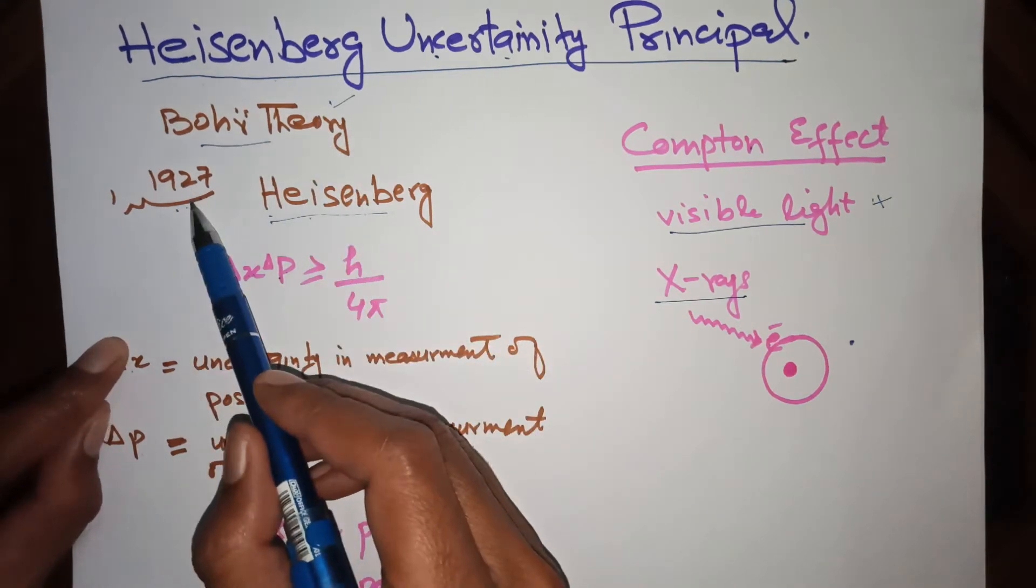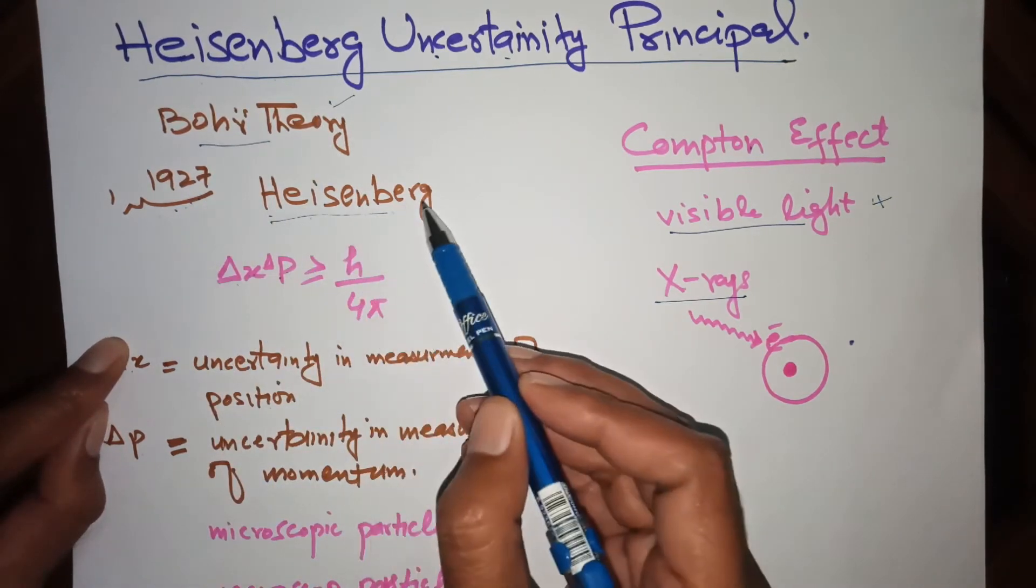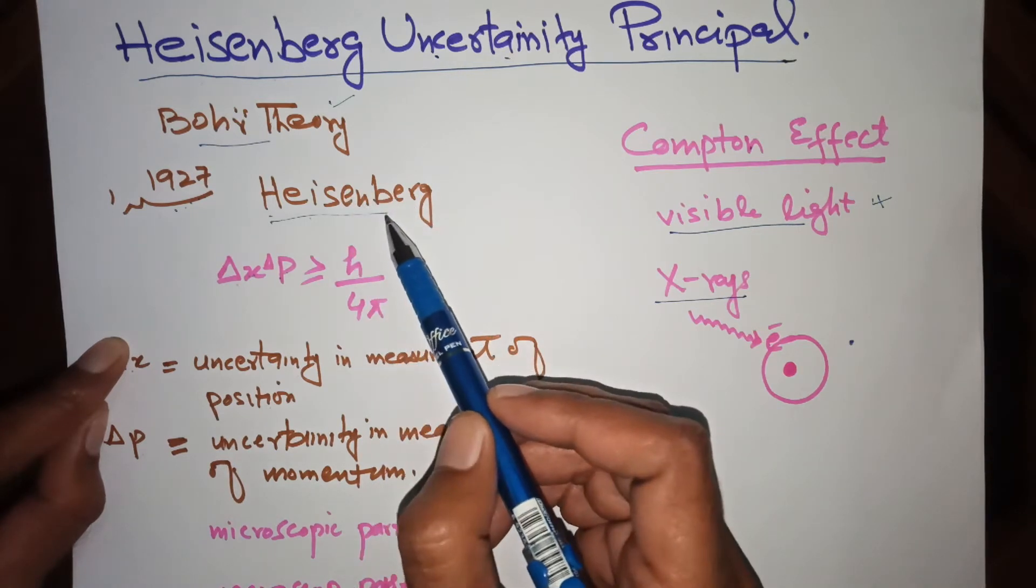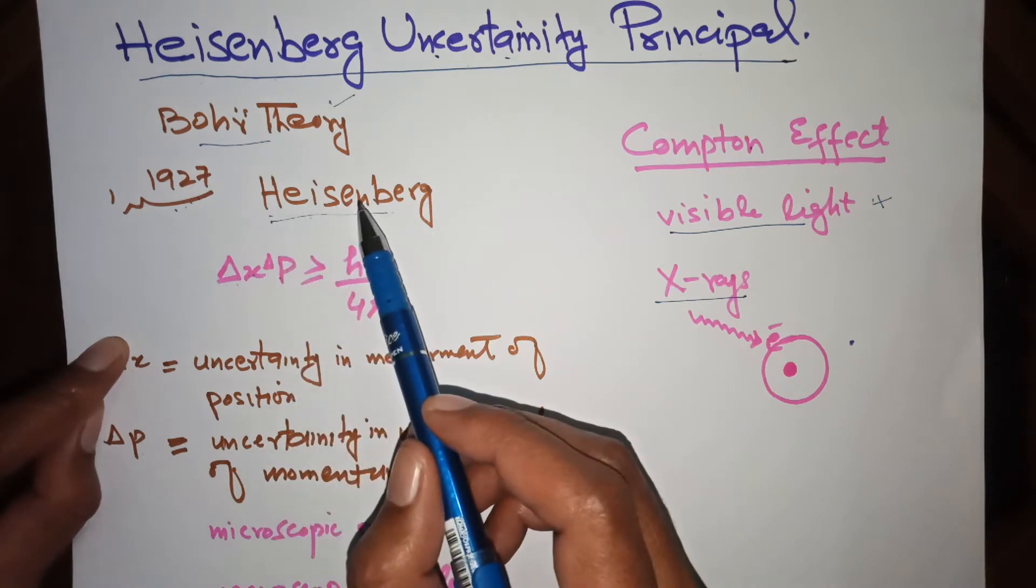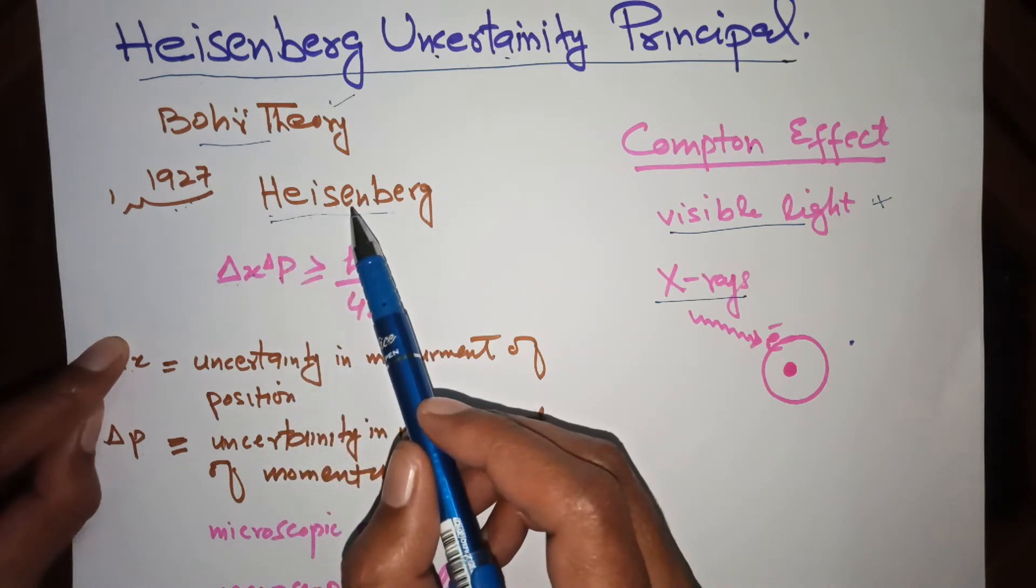But in 1927, Heisenberg gave the idea that if we consider the electron as a wave, we cannot find the position and the momentum of electron simultaneously.